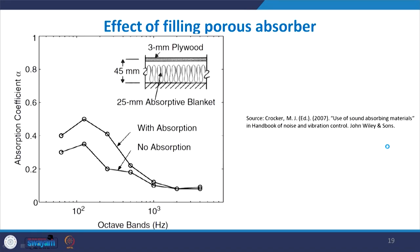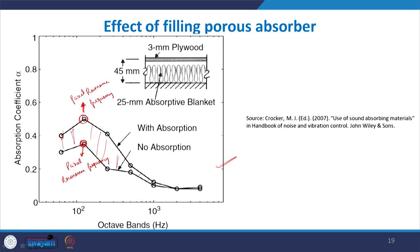A graph shows the effect of adding porous material. Without porous material, absorption shows a sharp peak at the panel resonance frequency. With porous fill, the resonance frequency remains approximately the same, but overall absorption magnitude increases because there are now two-way losses — work done vibrating the panel plus losses through the porous material. Hence overall absorption enhances throughout.